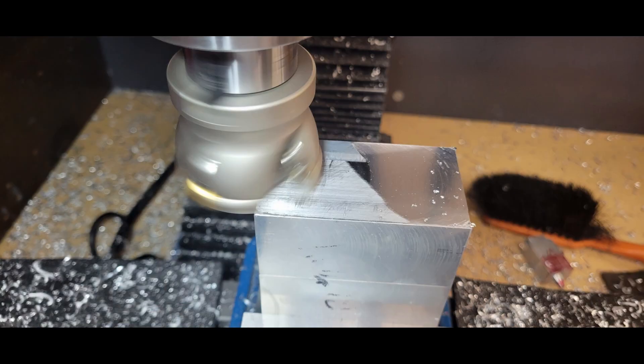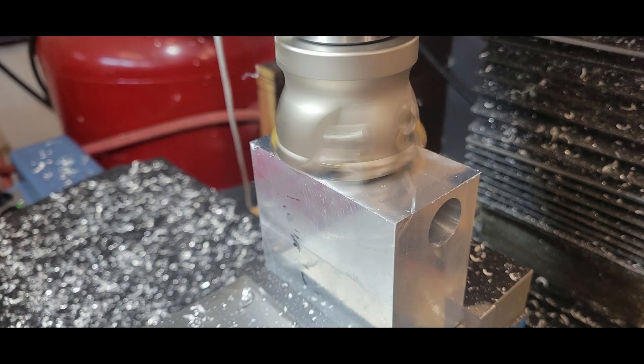Notice here the first cut of the face mill shows that the camshaft bore is not parallel to the sides. Of course it will be after we square up the work piece.